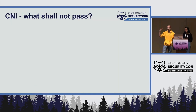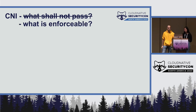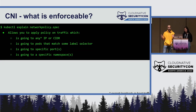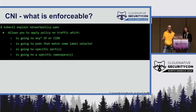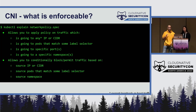Wizard number one: the CNI. What can you actually enforce? Calico, Cilium, and other big CNIs often offer their own network policy CRDs with fancier capabilities. To keep things simple, we'll talk about the vanilla Kubernetes network policy. Basically you can apply policy to a broad range of traffic types and make a block or permit decision based on characteristics of the traffic itself — things like blocking traffic going to a specific destination.